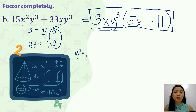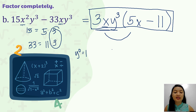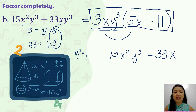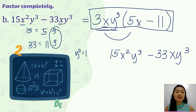We verify by multiplying: 3xy cubed times 5x gives 15x squared y cubed — correct for the first term. Then 3xy cubed times negative 11 gives negative 33xy cubed. The product matches the original expression, confirming our answer is correct.